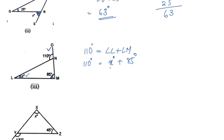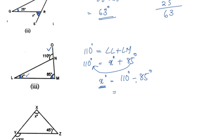For the next figure, finding X: one angle is 85 degrees and the exterior angle is 110 degrees. X is equal to 110 minus 85, which is 25 degrees.